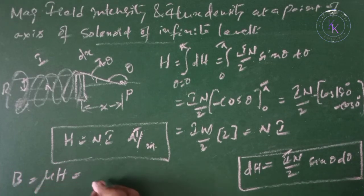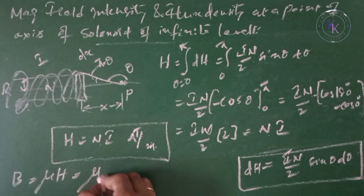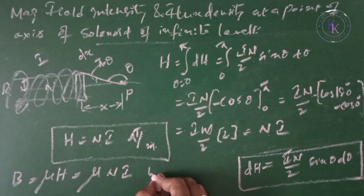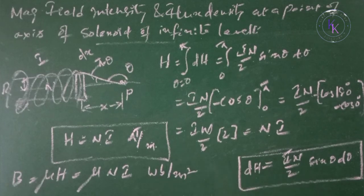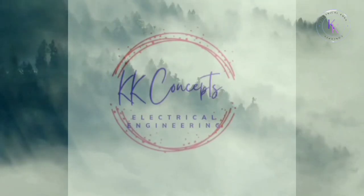Now the magnetic flux density B is given by μH, that equals to μNI, weber per meter squared in magnitude.